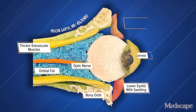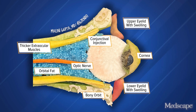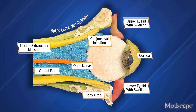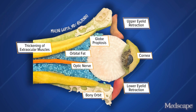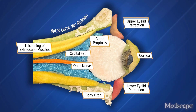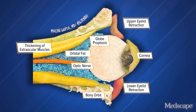In thyroid eye disease, the orbit is infiltrated by B and T cells and CD34-positive fibrocytes from the bone marrow. These fibrocytes differentiate into myofibroblasts or adipocytes. Immunoglobulins against IGF-1 receptors activate signaling in the orbital fibroblast. The fibroblasts then produce hyaluronan and cytokines IL-1-beta, IL-6, IL-8, IL-16, tumor necrosis factor alpha, and CD4-ligand.